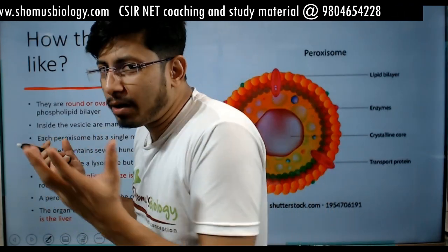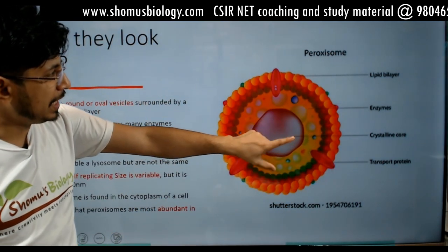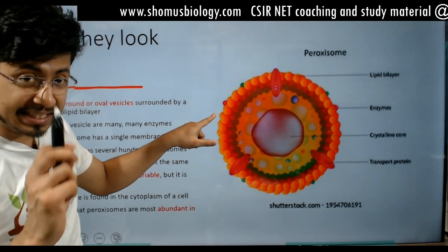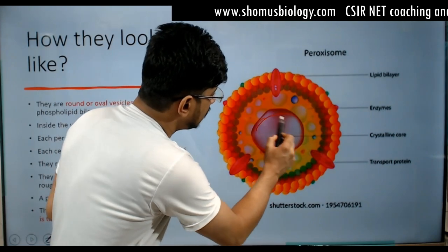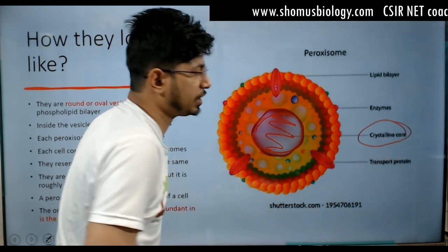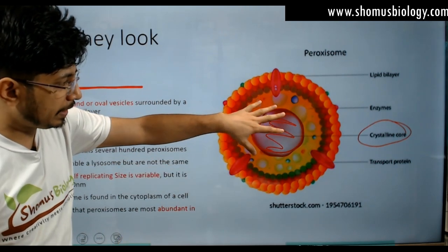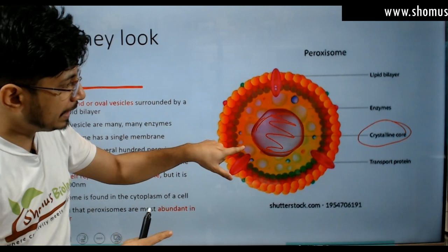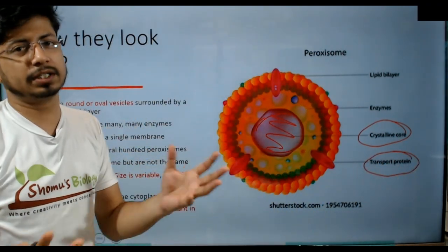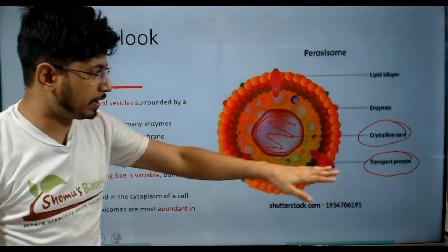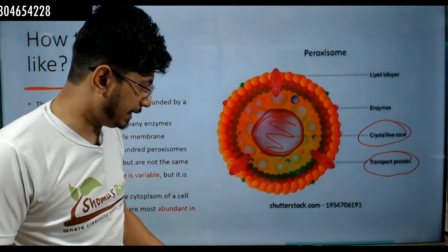Now I'm going to talk about how they look like. This is another modified version of the paroxysome structure, where we have a lipid bilayer outside — a single layer — then we have enzymes inside, and it has a core structure which is kind of crystalline in nature. How exactly they are formed is not very clear, but we know they have a crystalline core, and in the bilayer they have transport proteins as well. This is something unique which is generally not found in the lysosome — lysosomes don't have transport proteins in the bilayer, but paroxysomes do.